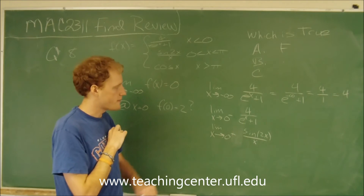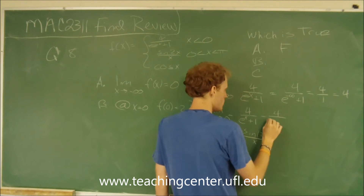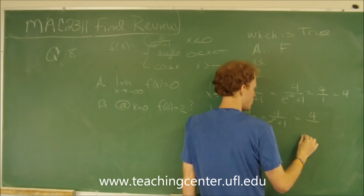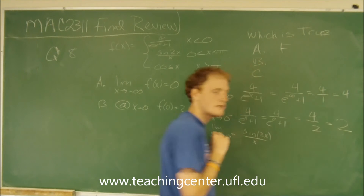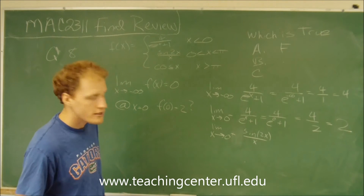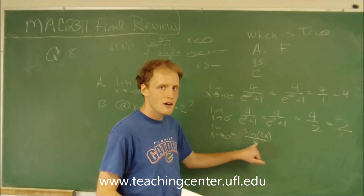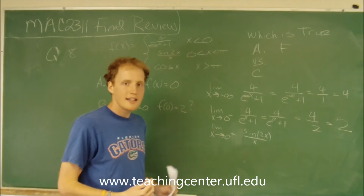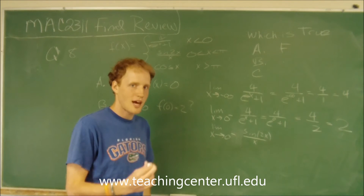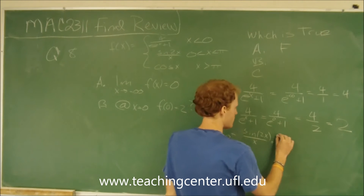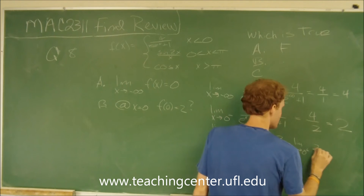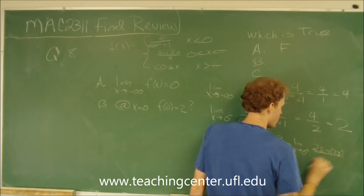Let's evaluate these limits. For the first one, plug in 0: 4 over e to the 0 plus 1. Since e to the 0 is 1, it becomes 4 over 1 plus 1, which equals 2. For the second part, we have sine of 2x over x, which is very similar to the sine of theta over theta. To use that limit, we need the denominator to match the inside of the sine function, so multiply both top and bottom by 2, giving the limit as x approaches 0 from the right of 2 times sine of 2x over 2x.